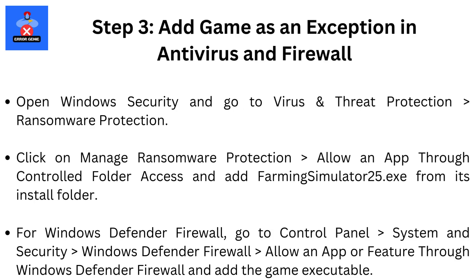Step 3: Add the Game as an Exception in Antivirus and Firewall. Open Windows Security and go to Virus and Threat Protection, then Ransomware Protection. Click on Manage Ransomware Protection, then allow an app through controlled folder access, and add Farming Simulator 25.exe from its install folder.